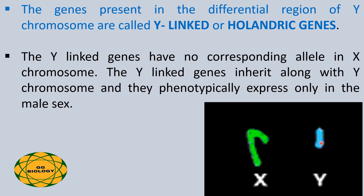The genes present in the differential region of the Y chromosome alone are called Y-linked genes or holandric genes. Holandric genes are completely found only in males. The Y-linked genes have no corresponding allele in the X chromosome. The Y-linked genes inherit along with the Y chromosome and phenotypically express only in the male sex.